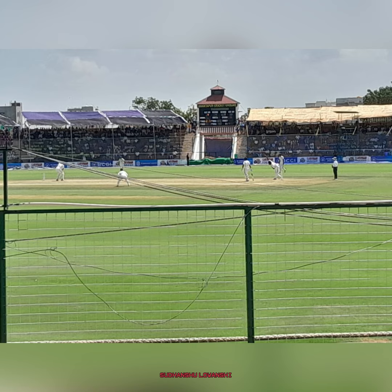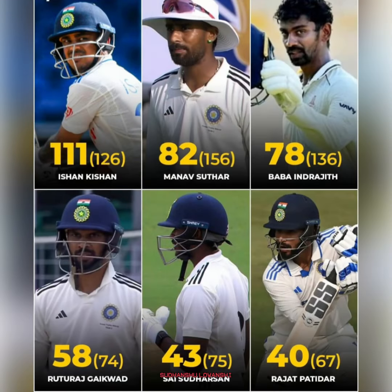Manav Suthar is cleaned up by Rahul Chahar and is dismissed for 82 off 156 balls, bringing to an end a 36-run partnership for the final wicket. Sandeep Warrier remains unbeaten at 11, and that's the end of the innings for team India C, bowled out for 525 runs in their first innings in 124.1 overs against team India B.